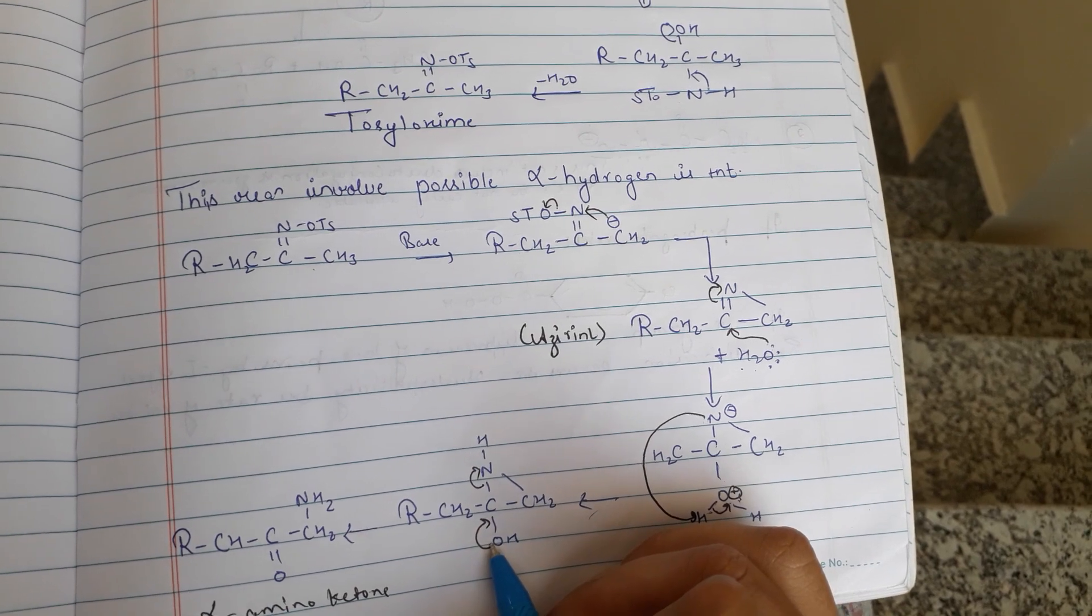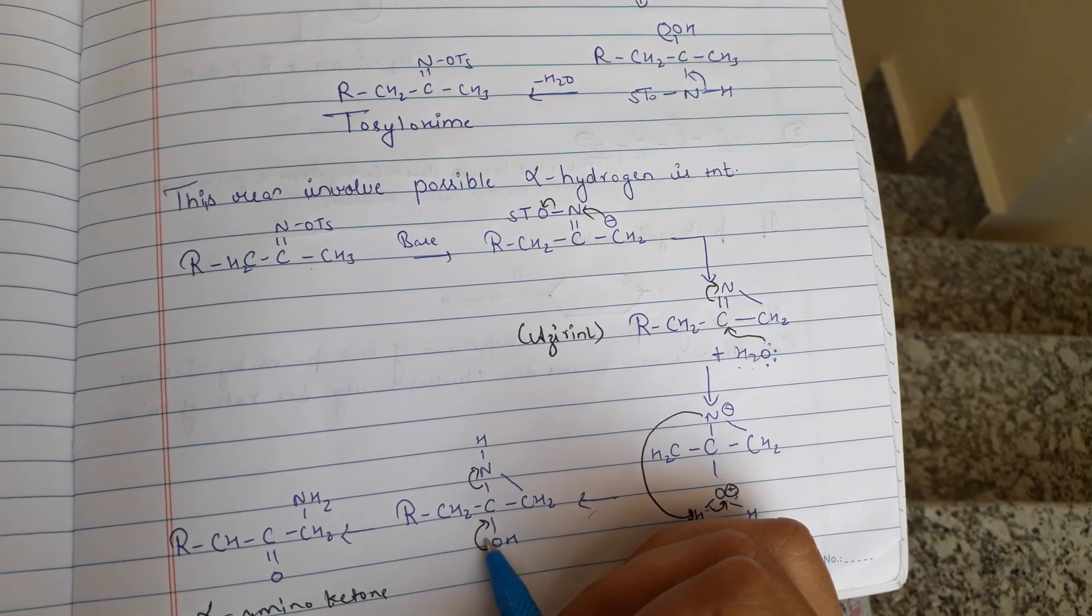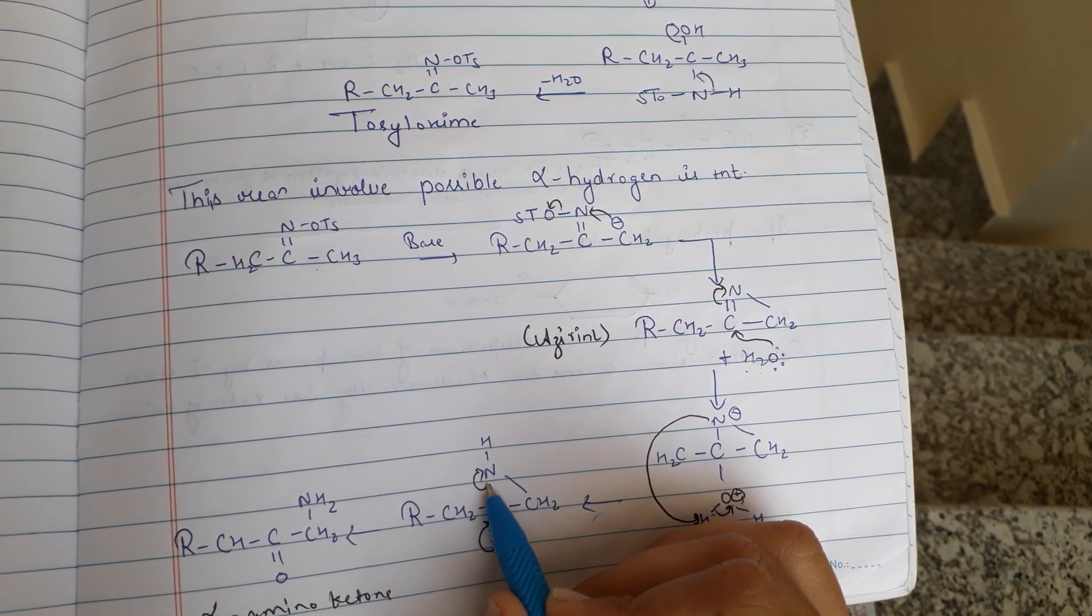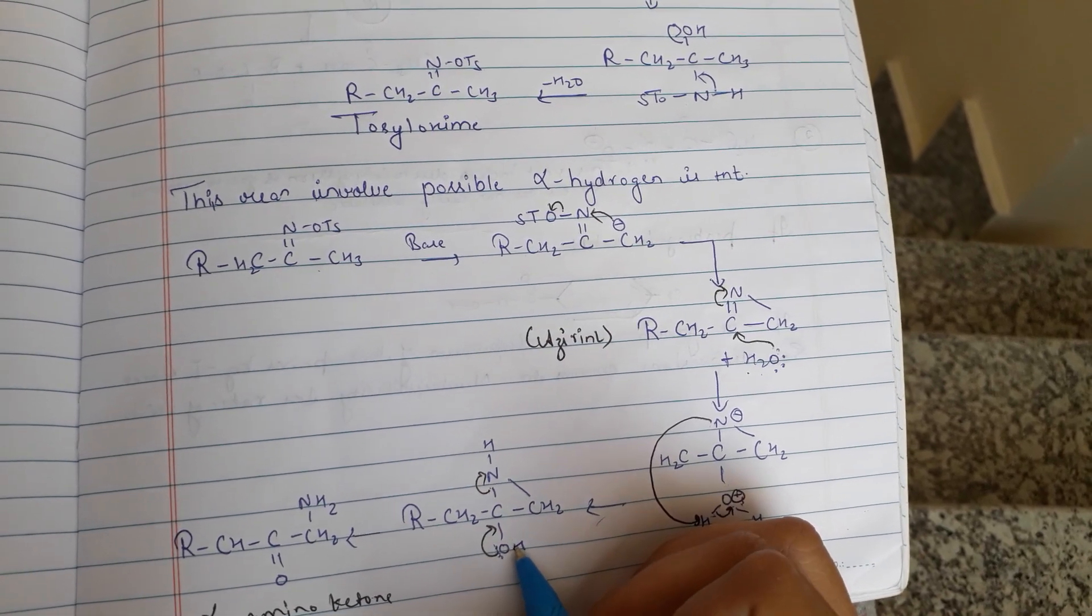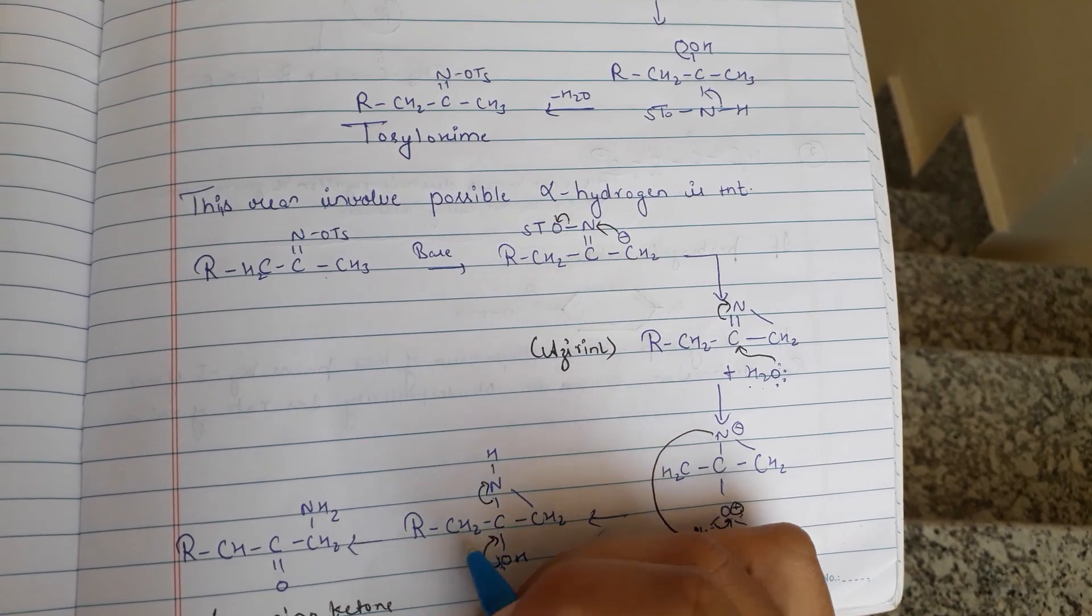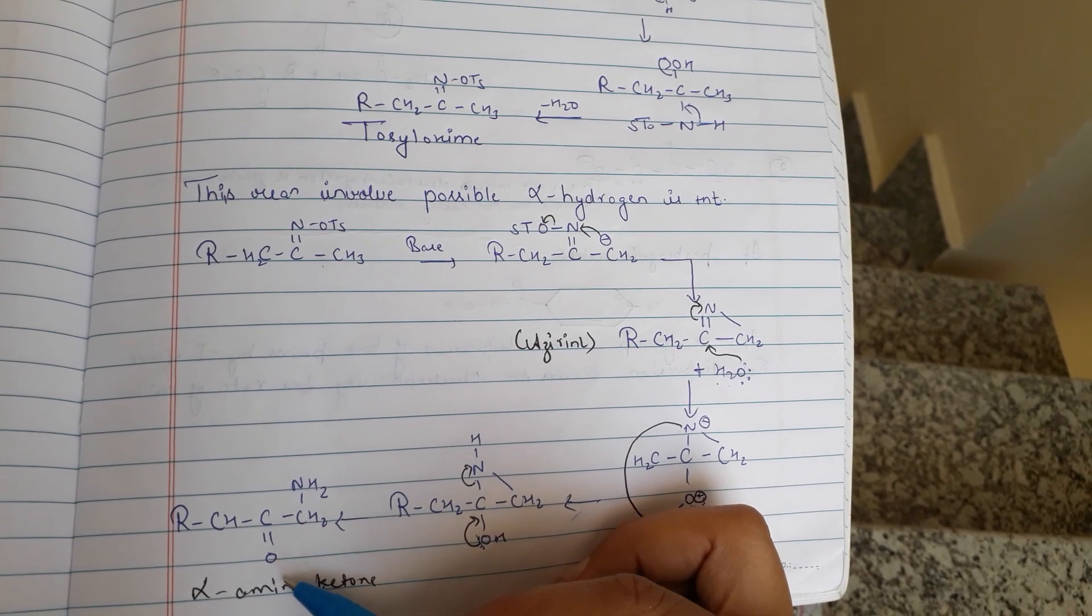Now this H will shift here, this lone pair shifts here, and that bond will be shifting here, and that H shifts here. Then this forms NH2 and there is formation of a carbonyl alpha amino ketone.